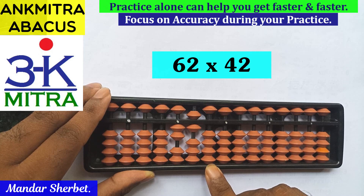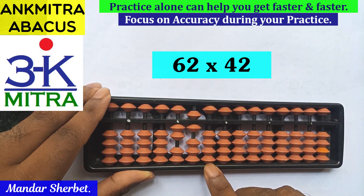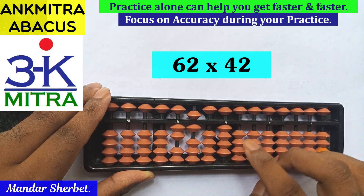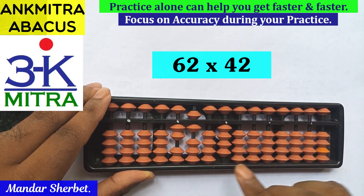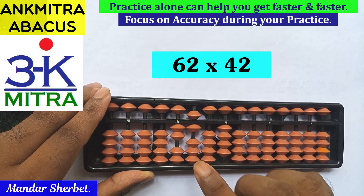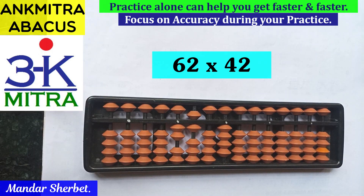Now we'll move one place to the right to the second rod. The final step is 2 multiplied by 2, which will be taken as 04 — 0 here and 4 on the next rod. The final answer after multiplying 62 by 42 is 2604. Please do try it out yourself.